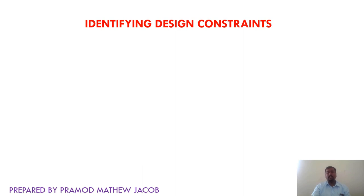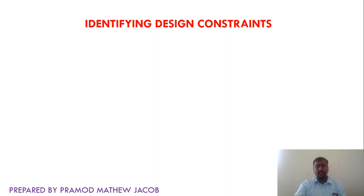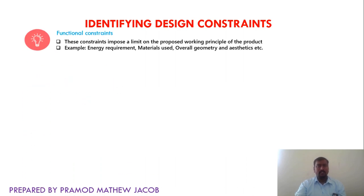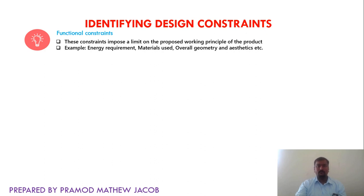Next is identifying the design constraints. Whenever the designer is designing a particular product, there may be constraints that impose restrictions on the designer. There will be functional constraints, which impose a limit on the proposed working principle of the product. For example, energy requirements like the product should work on electricity or solar energy, or constraints on the material used — if developing a carry bag, it should not be plastic but an eco-friendly material. There may also be constraints on overall geometry — it should be simple, small, and easy to use — and aesthetics, such as it should be visually pleasing. All these are considered functional constraints.